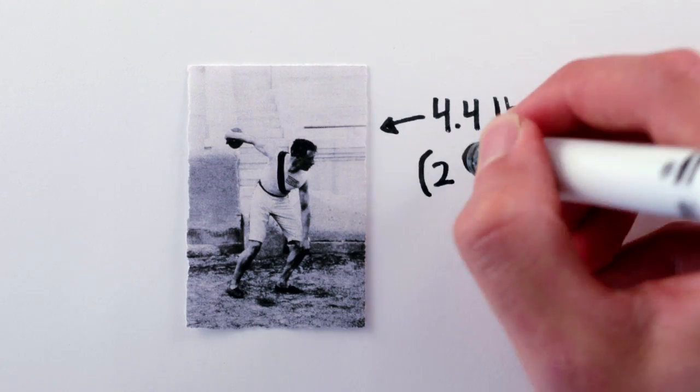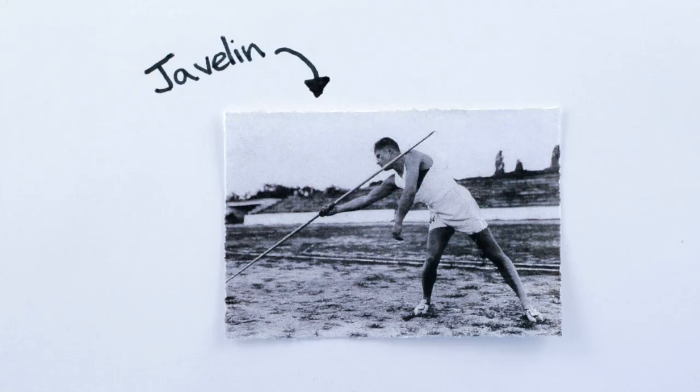The discus, as you may know, is basically a four-pound frisbee, and the javelin is, well, a javelin.